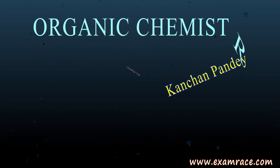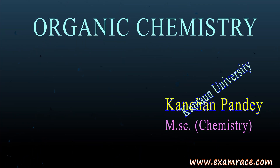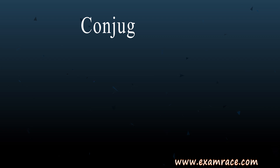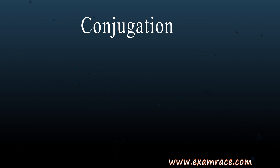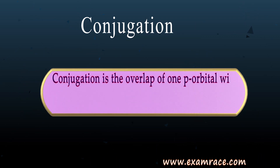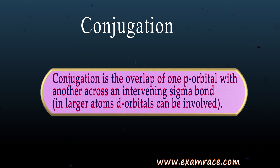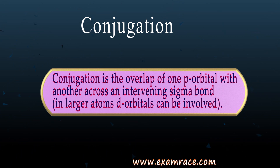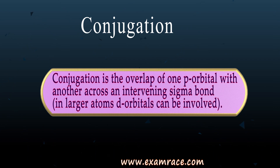The organic chemistry topic is conjugation and cross conjugation. The term conjugation refers to the overlap of one p orbital with another p orbital across an intervening sigma bond, meaning the sigma bond comes between the p orbitals.